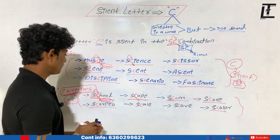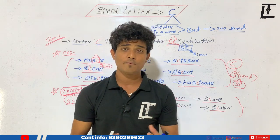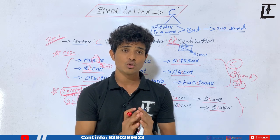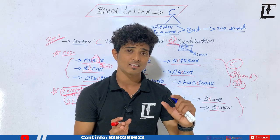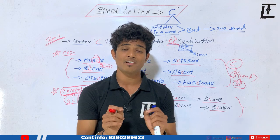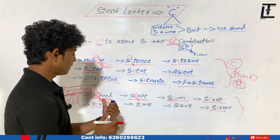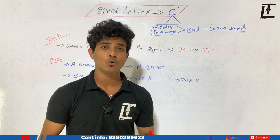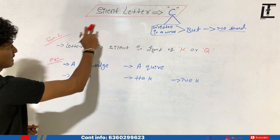So this is what rule number one says about how the letter C is kept silent. You must keep in mind what the exceptions are. If you see the letter C in the SC combination, do not assume that C must always be silent there — you may encounter a few exceptions. Please keep the exceptions in mind as well. Now, let me tell you rule number two of silent letter C.